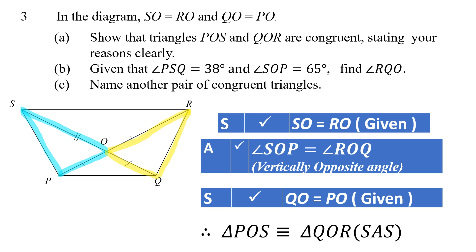SAS means side, angle, side — the order is very important. You must have a side first, then the included angle, then the other side.